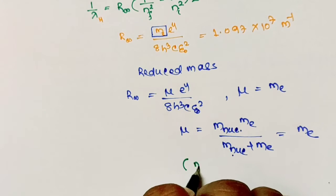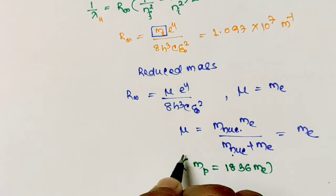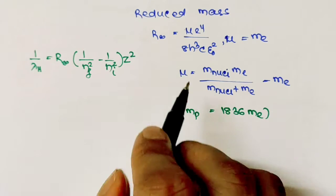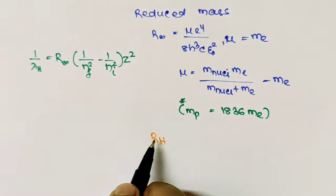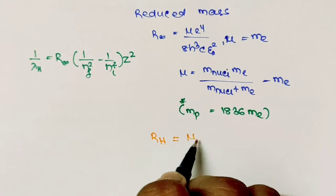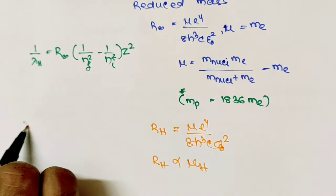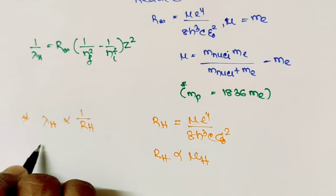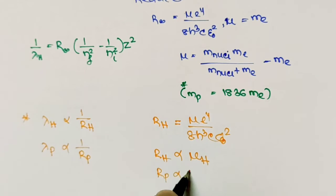R∞ is written because in hydrogen we take the nuclear mass to be infinite compared to the electron mass. We can write R proportional to reduced mass μ. So R_H is proportional to μ_H, and wavelength λ_H is proportional to 1/R_H. Similarly for positronium, λ_P is proportional to 1/R_P, and R_P is proportional to the reduced mass of positronium.